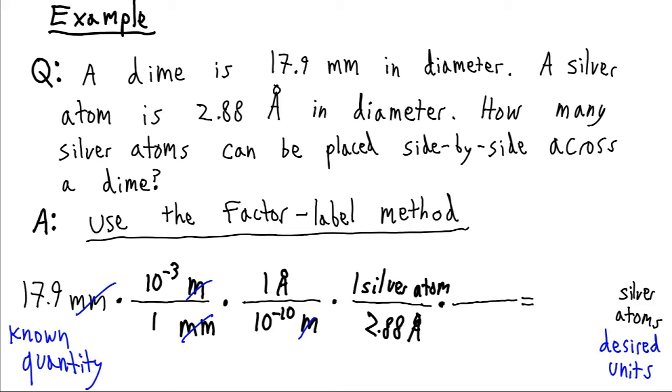And it looks like I've done this successfully. We get rid of angstroms. Now we've gotten from millimeters to silver atoms. So just have to multiply 17.9 times 10 to the minus 3 divided by 1 times 1 divided by 10 to the minus 10 times 1 divided by 2.88. And when I do that, I come up with 6.22 times 10 to the 7. So 62 million silver atoms. Quite a few of them going across.